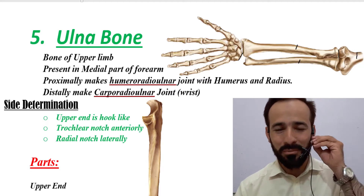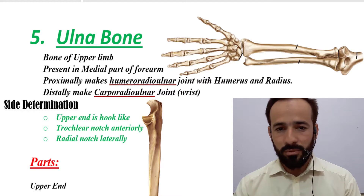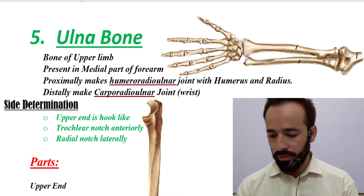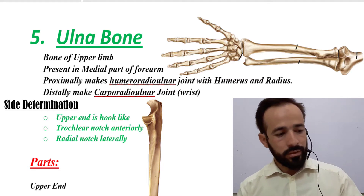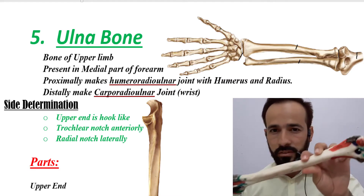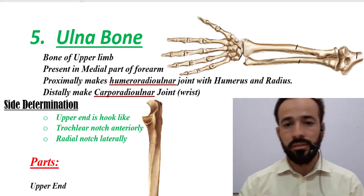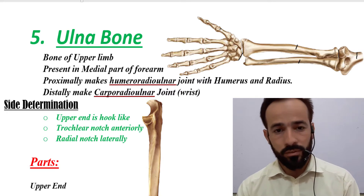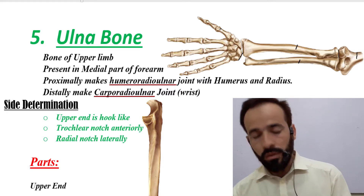Assalamualaikum dear friends, welcome back. We are discussing the bones of the upper limb. In the previous lectures we discussed the radius bone, the external features of the humerus bone, the clavicle, the scapula, and the bones of the lower limb. Now in this lecture we are going to discuss the ulna bone.